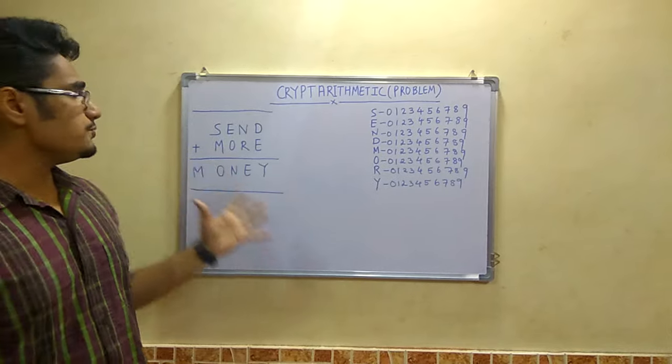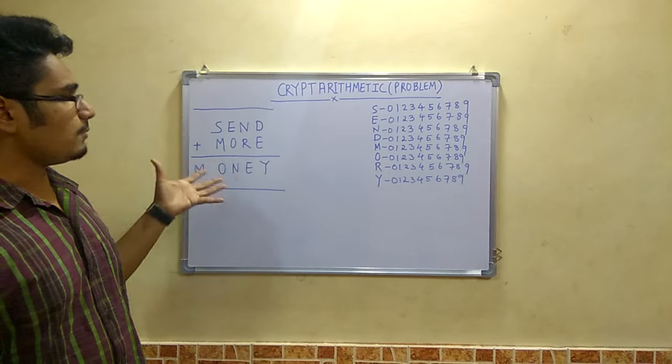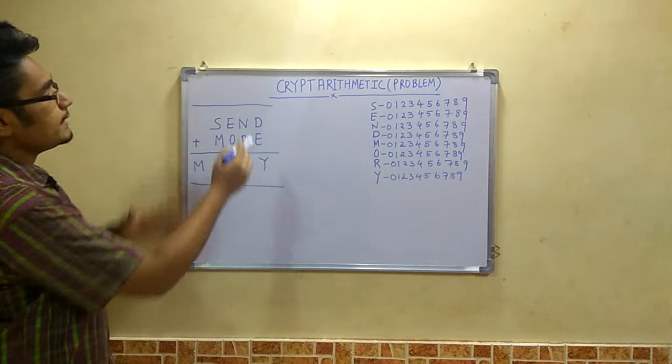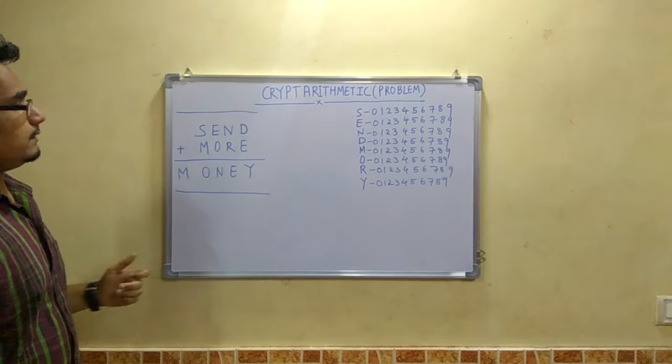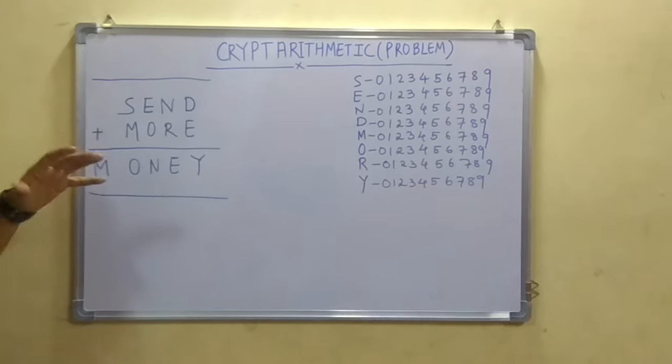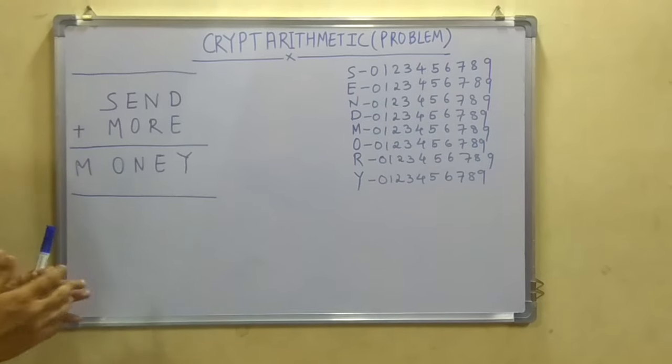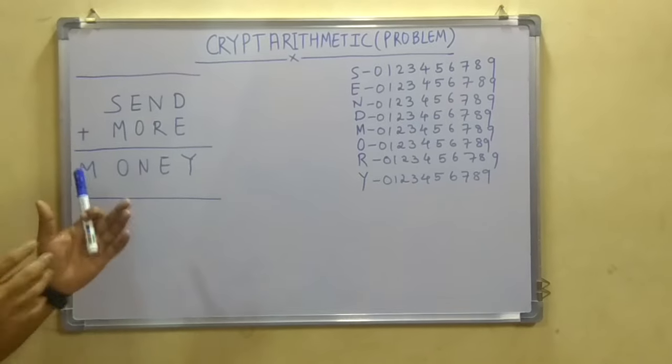So I am going to show you how to solve a problem on cryptarithmetic. Like this is the problem they have given: SEND plus MORE is equal to MONEY. Now you don't understand basically what is SEND plus MORE is equal to MONEY, but this is how the cryptarithmetic problem is basically structured.